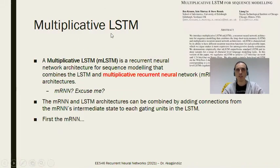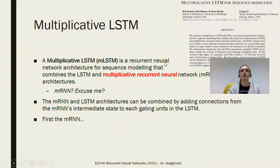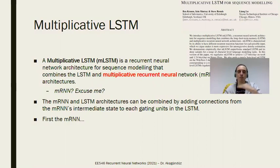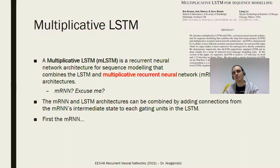There are also some famous variants, one of which is the multiplicative LSTM. Multiplicative LSTM is an idea of multiplicative recurrent neural networks applied to LSTMs. To understand it, you should first understand what a multiplicative RNN is. In a vanilla RNN, you are simply convolving the input and output in a linear additive manner.